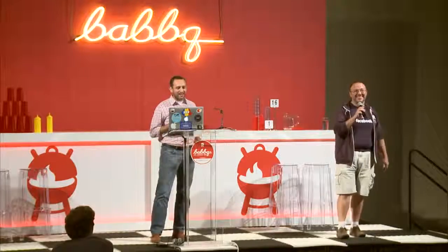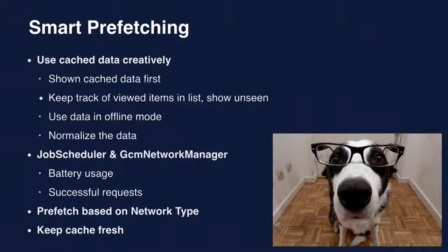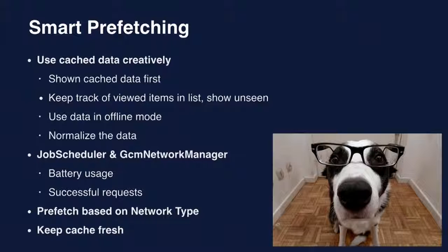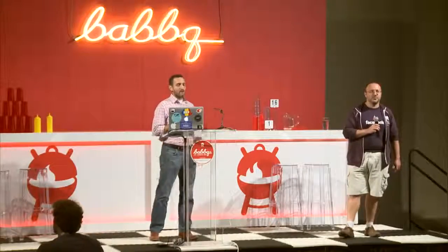Let's talk about what smart prefetching looks like. Use cache data creatively — in our app, when you wake up the app initially, we'll show you stories you've already downloaded that you've never seen before. There's no reason to show you something and wait for the network. This is great because in offline mode you can still open the app, scroll through your newsfeed, like and comment — there won't be fresh stories, but there'll be stories relatively recently downloaded. If you can normalize the data, take data from the list view and put it on top of your detail view while loading the rest, so the user sees something immediately instead of just a spinner.